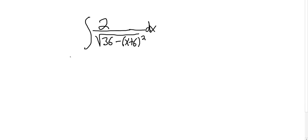So to work this out, we have to use a formula from calculus. The formula is the following: if you have 1 over the square root of a² minus x² dx,